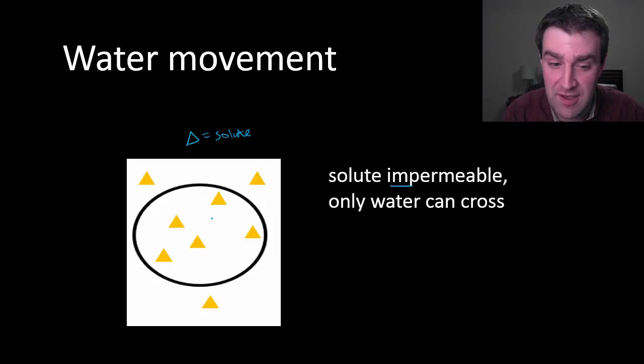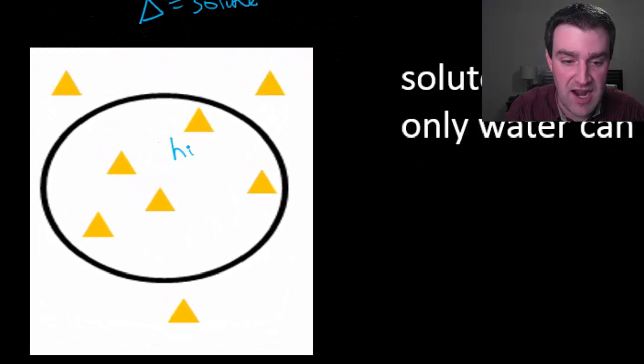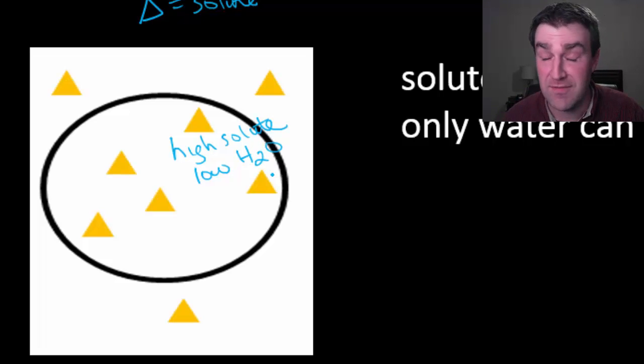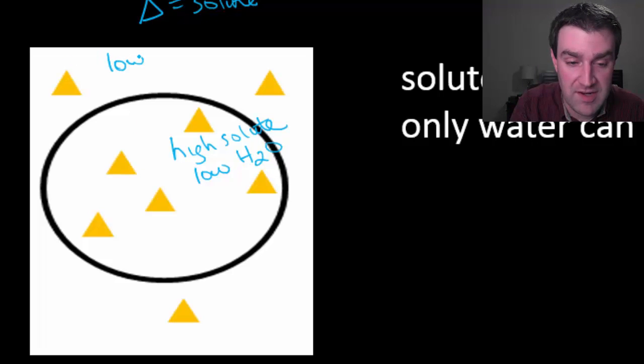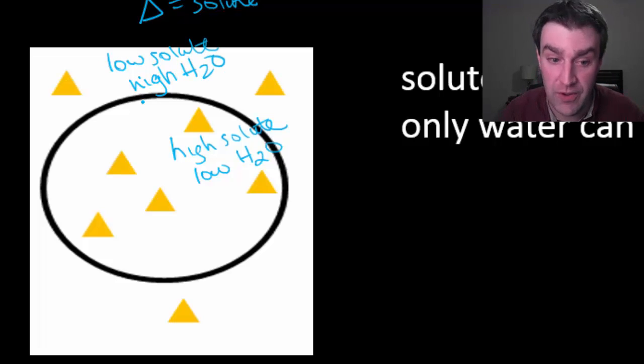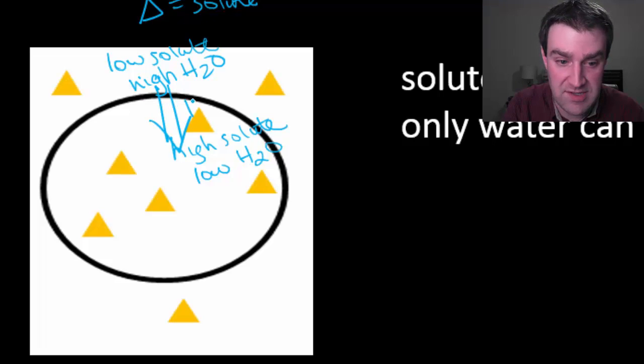So how will water generally go? Well, you can either fill your space with water or solute, and so if there's a high amount of solute here inside the cell, then there has to be a low amount of water. Whereas outside the cell here there is a low amount of solute and so there is a high amount of water. Water will go from high to low concentration by coming into the cell.